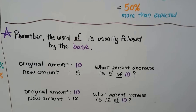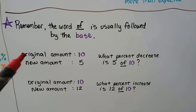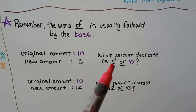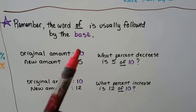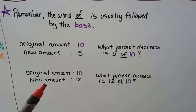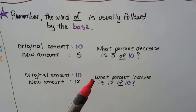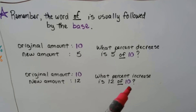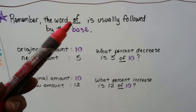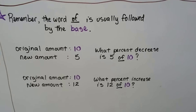Remember, the word 'of' is usually followed by the base. If the original amount is 10 and the new amount is 5, the problem says what percent decrease is 5 of 10 — and 10 is the original amount. Similarly, if the new amount is 12, it'll say what percent increase is 12 of 10. So the word 'of' is typically followed by whatever the base is, and that can help you identify the original amount.